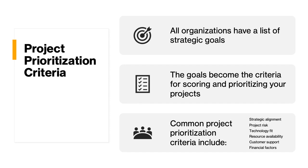Some of the common project prioritization criteria include strategic alignment — how well does the opportunity align with our strategic objectives? What about project risk — does it have significant risk, or organizational risk? Is this opportunity likely to have a negative impact if unsuccessful, or will it bring a positive outcome, a risk to exploit? We can also look at projects from a technology fit, resource availability, customer support perspective, and finally, financial factors.